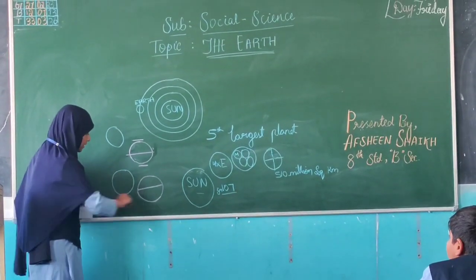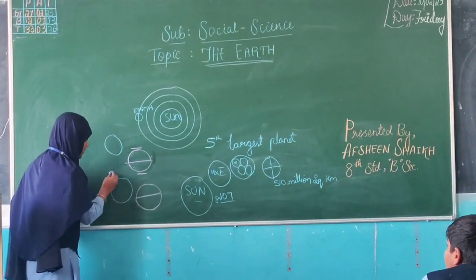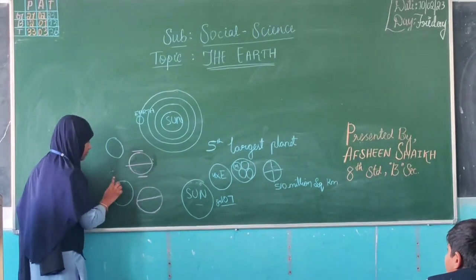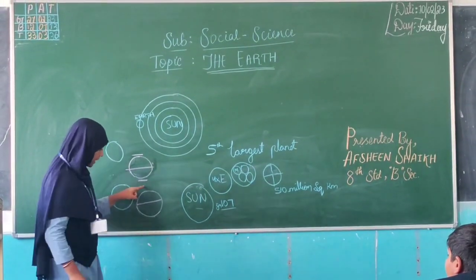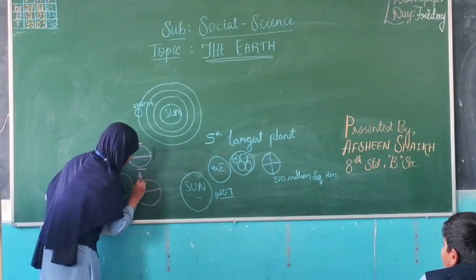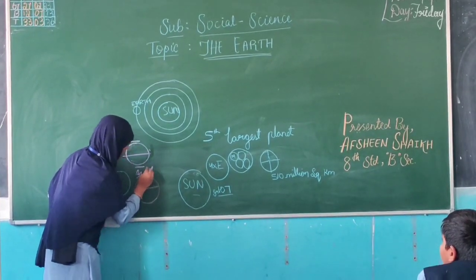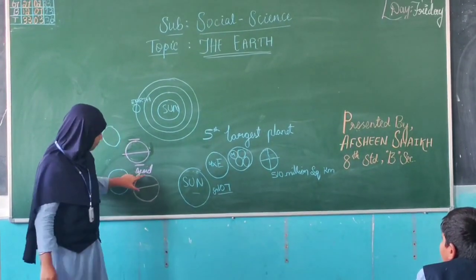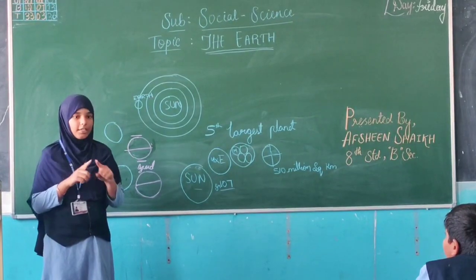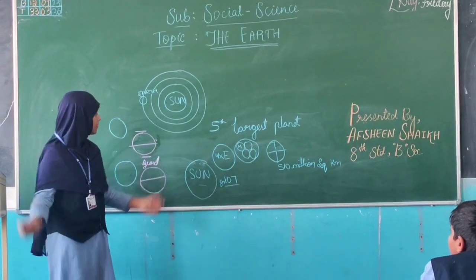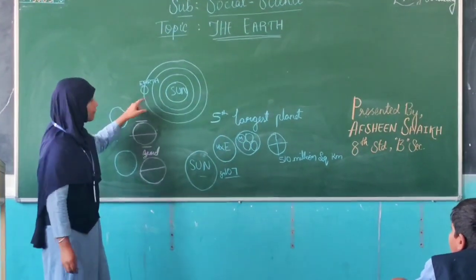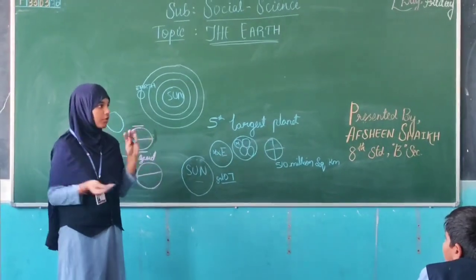We commonly think the Earth has a circular or spherical shape, but the actual shape of the Earth is called a geoid — which means flattened from the poles and bulged from the equator. That covers the outermost description of the Earth.